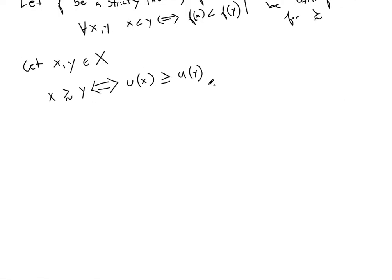And then from here, notice that these are in R, so they can be used as arguments in our function f. Using the definition of an increasing function, since this is bigger than this, when we plug those into our function as arguments, we also maintain the greater than or equal to relation. So f of u of x is greater than or equal to f of u of y, and this is just v of x being greater than or equal to v of y.